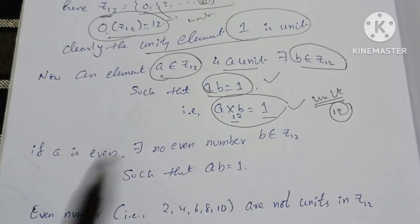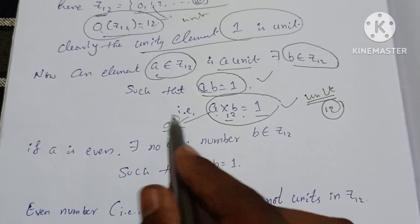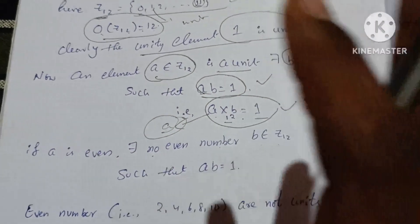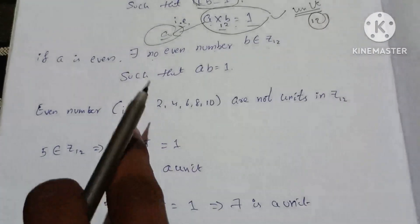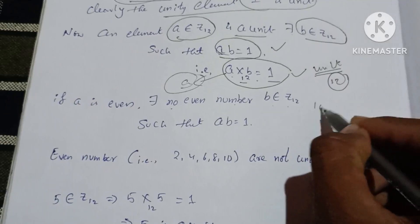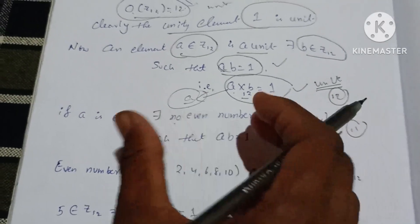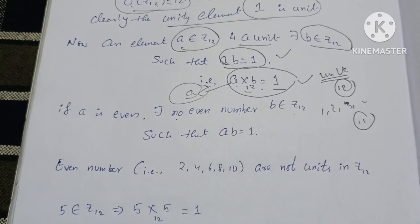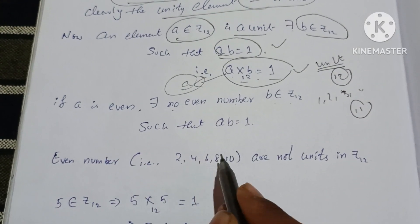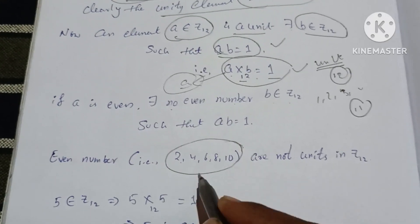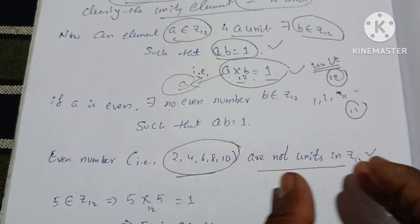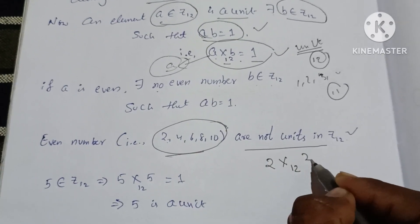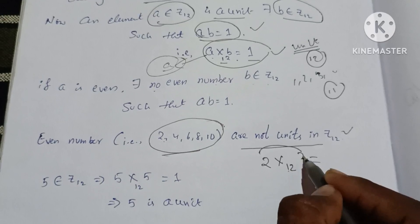If A is even, no even number B belonging to Z₁₂ can satisfy the condition. So even elements are not units. The element 0 is clearly not a unit.